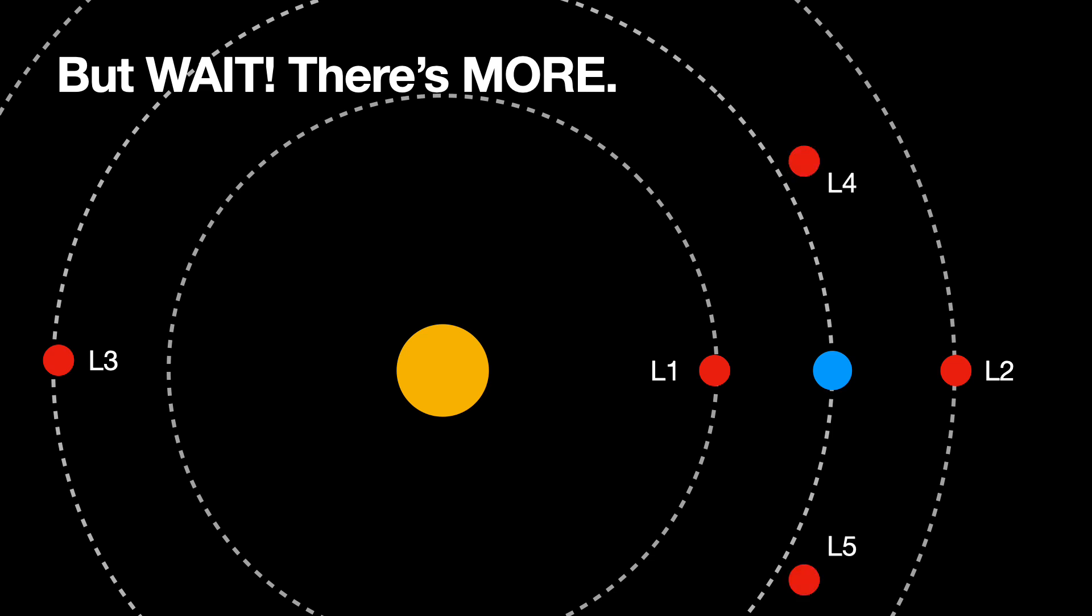There's two more. There's L4 and L5, which are near the same orbit as the Earth, but ahead and behind of it. Those two are very stable places and actually that's where you can collect asteroids. So that's what you need to know about Lagrange points.